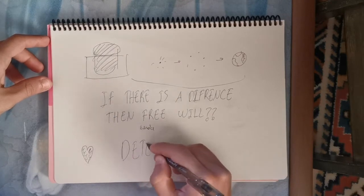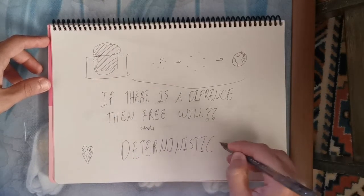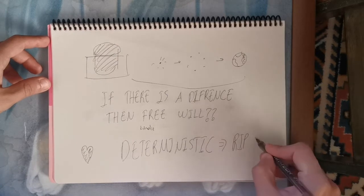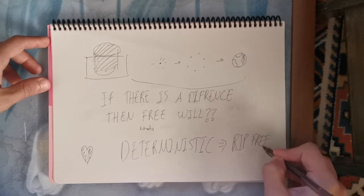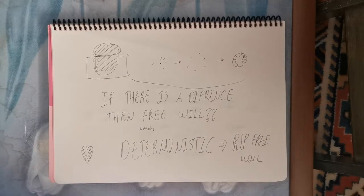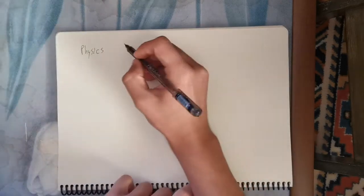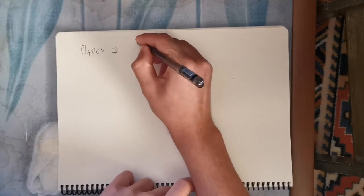So determinism kind of kills the free will. So we will try to find a non-deterministic thing, and from there, maybe we can show that we are non-deterministic, hence we have free will. Hopefully, we have free will. So, in other words, if we prove that physics is non-deterministic, then we have free will...